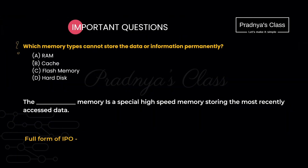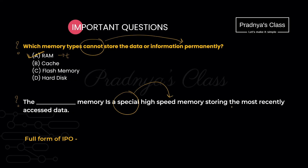Which memory cannot store data or information permanently? From the given options it is RAM — RAM stores data temporarily, not permanently. The blank in 'the ___ memory is a special high-speed memory storing the most recently accessed data' is cache memory. The full form of IPO is input, process, output — we follow these three steps to write simple programs for problem solving.